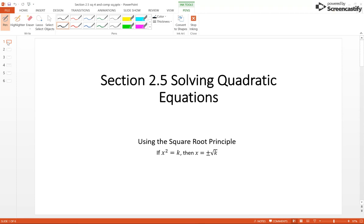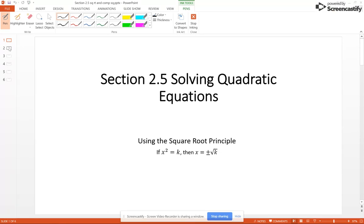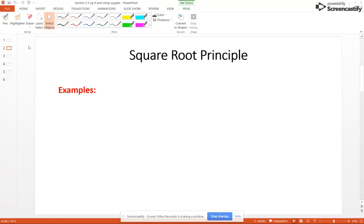Now the square root principle says that if x squared equals some number k, then x equals plus or minus the square root of that k. So for example, if I have x squared equal 100, then x is going to be plus or minus the square root of 100, which of course plus the square root of 100 is 10. So we get x equal plus or minus 10. Now the plus or minus is just a short way of writing two answers at once. So we have x equal negative 10 and x equal positive 10.